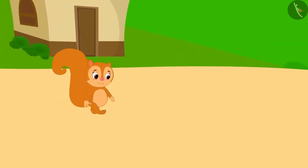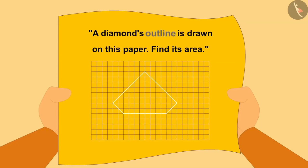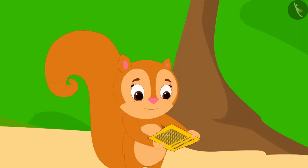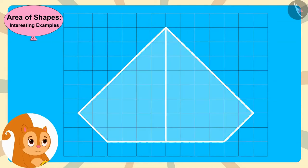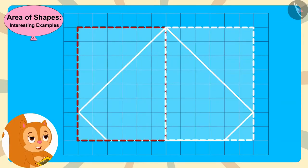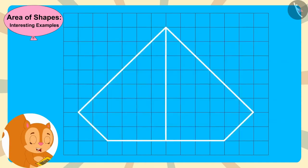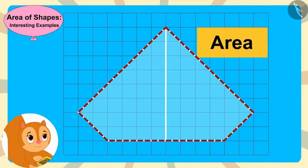Chanda was returning home from her shop when she saw a shiny paper under a tree. A diamond's outline is drawn on this paper — find its area, Chanda read. Chanda got excited. This diamond's outline is made of two equal parts, thought Chanda. Chanda drew a vertical line inside the outline of the diamond. Because this diamond is made of two equal parts, if I find the area of one part and multiply by two, I will get the area of the entire diamond.